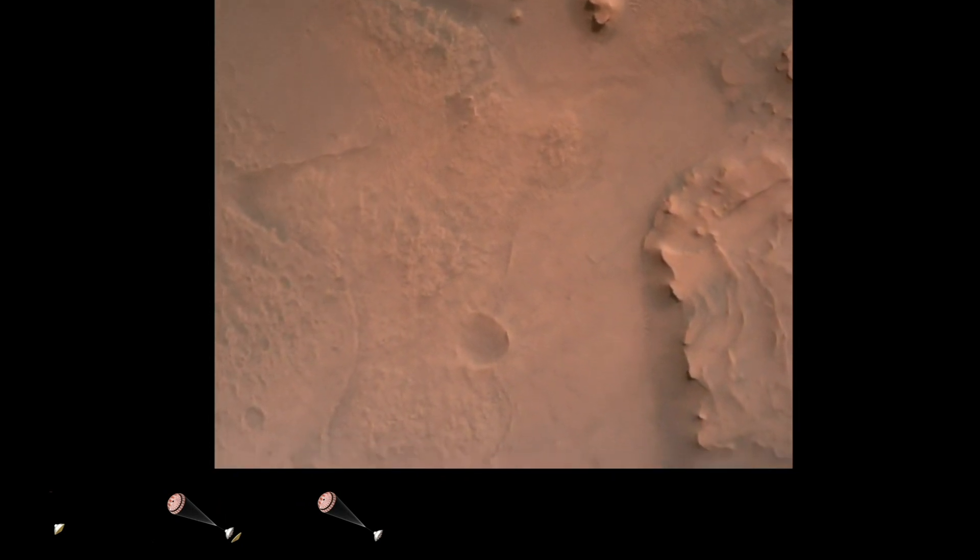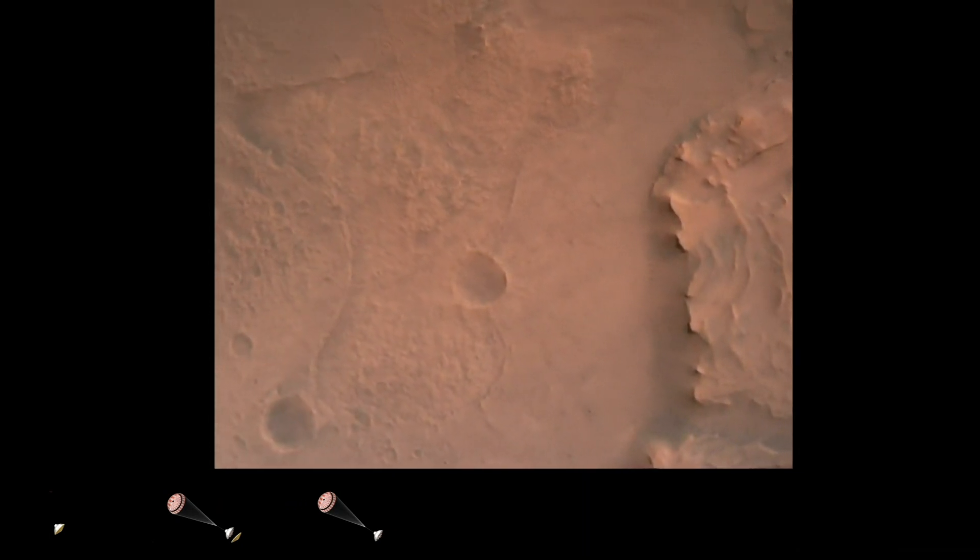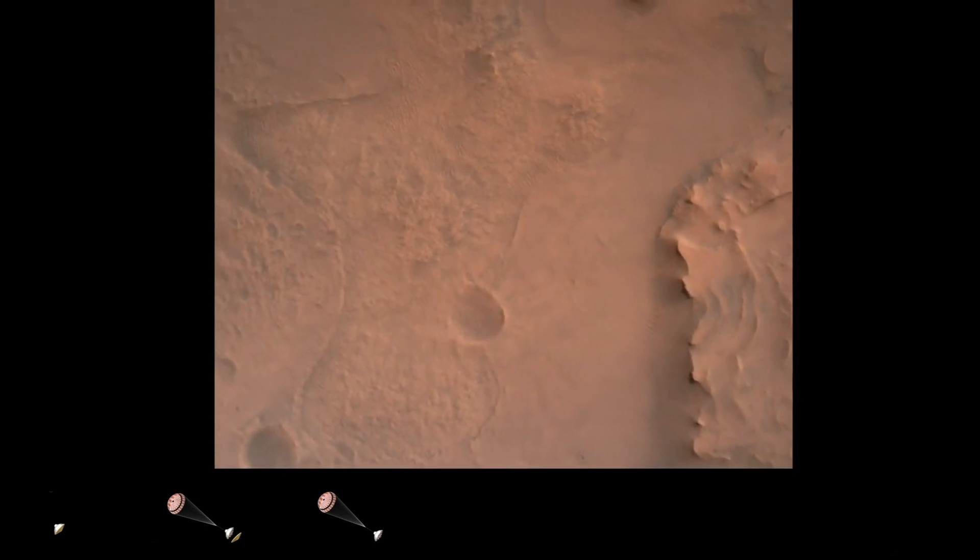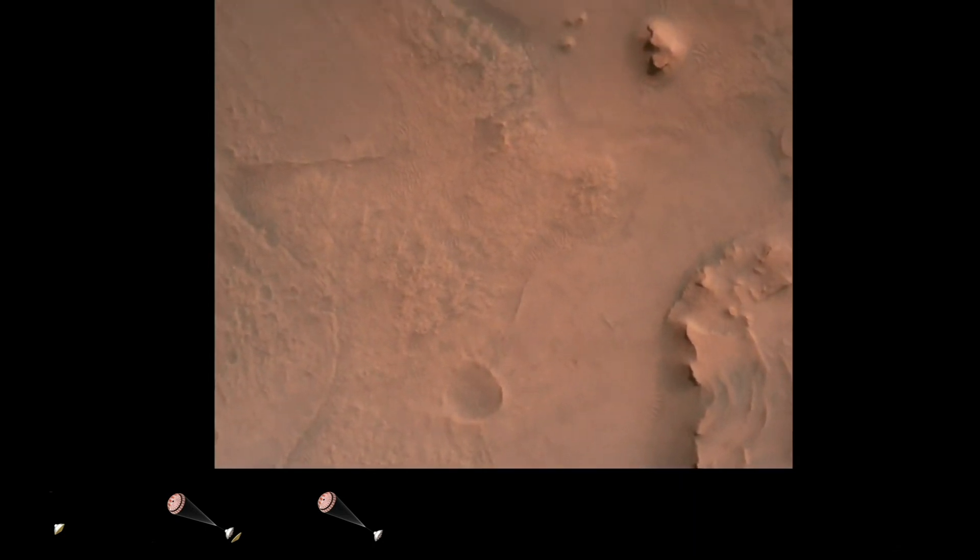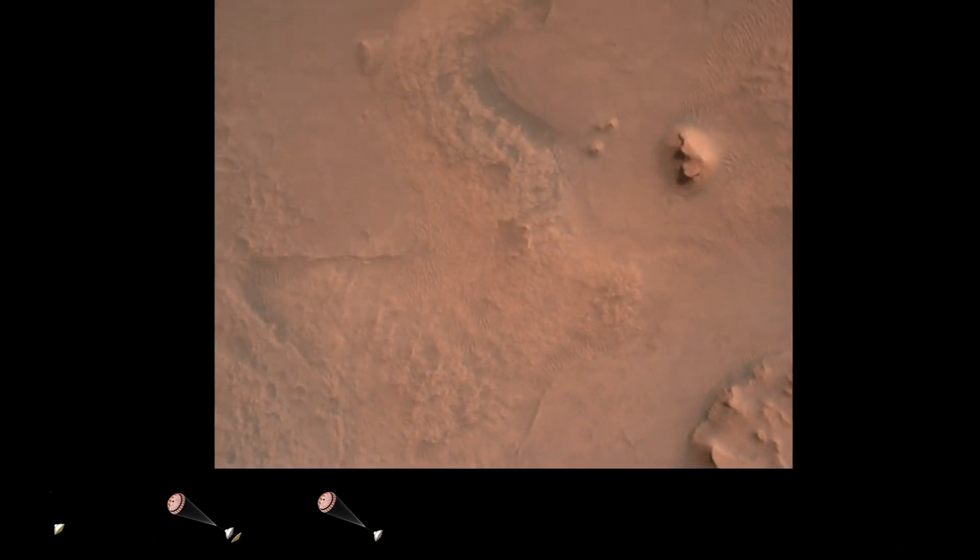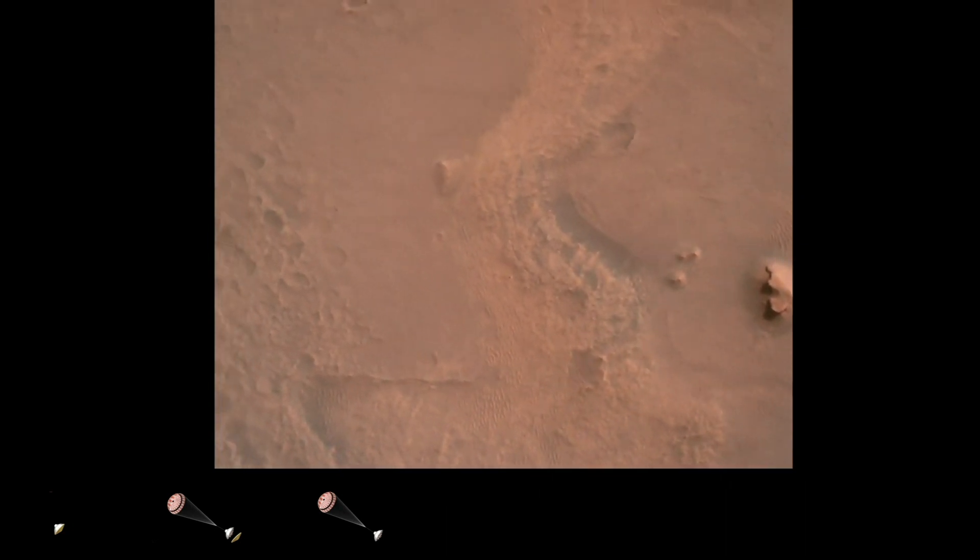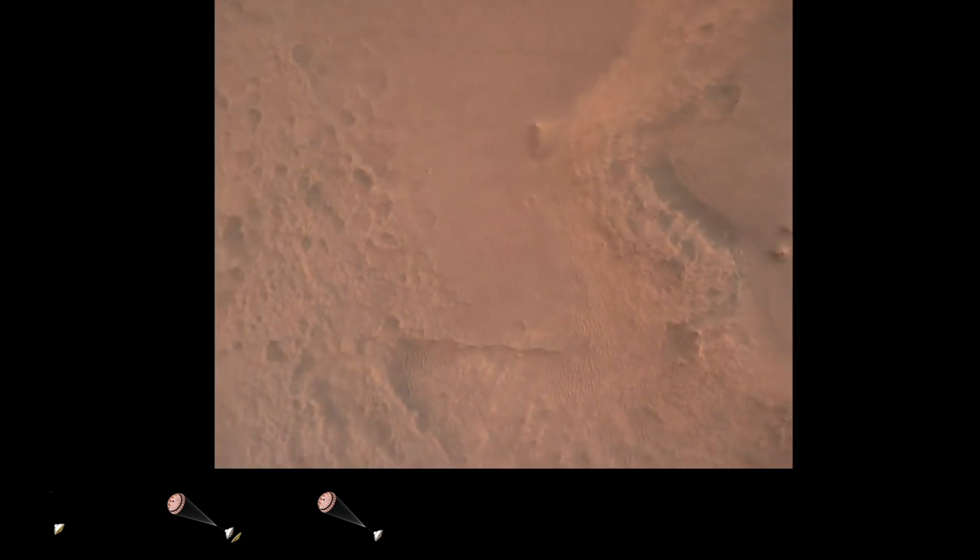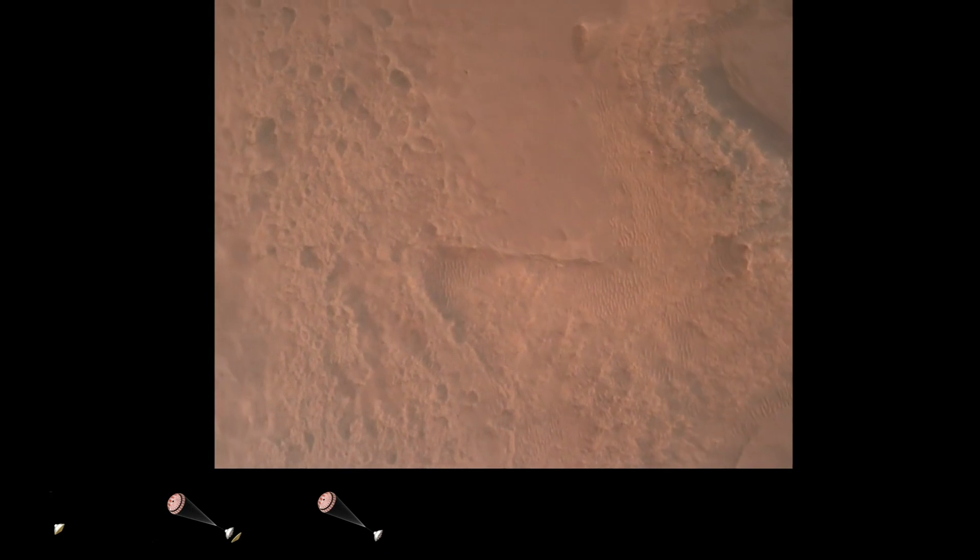Perseverance is continuing to descend on the parachute. We are coming upon the initialization of terrain relative navigation and subsequently the priming of the landing engines. Our current velocity is about 90 meters per second at an altitude of 4.2 kilometers.